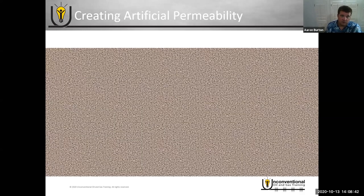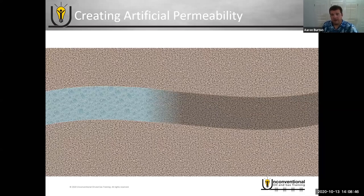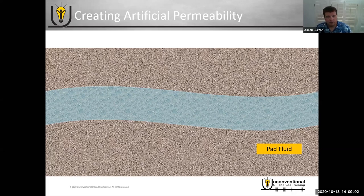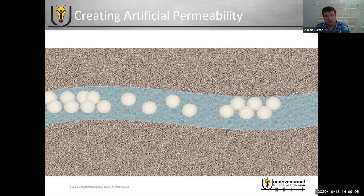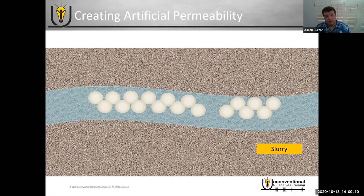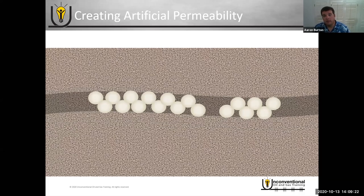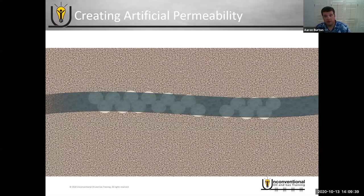Zooming in further to look at an individual fracture growing: as we apply pressure, we lead in with what's called a pad fluid — just clean fluid — whose primary purpose is to initiate and grow the fracture. Once the fracture is created, we switch to the slurry, putting proppant into the fluid and pumping it downhole. After the frac job is finished, we bleed off the pressure. The proppant holds the formation open so that once the pressure bleeds off, the formation can't fully close. That creates our artificial permeability — the conductivity — allowing us to produce hydrocarbon through the fracture.